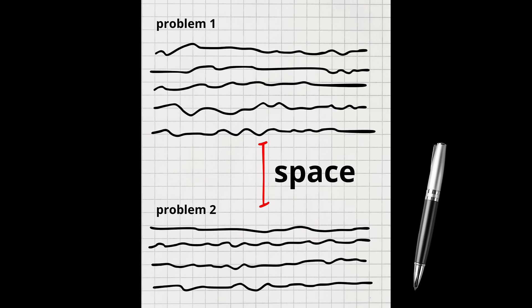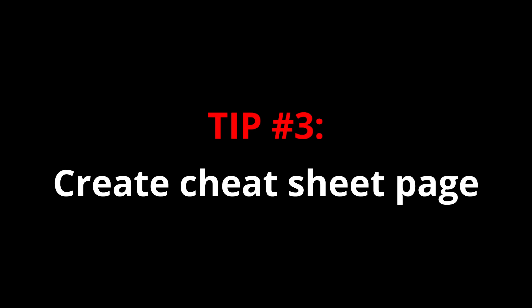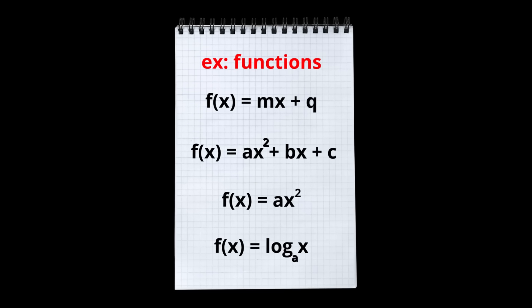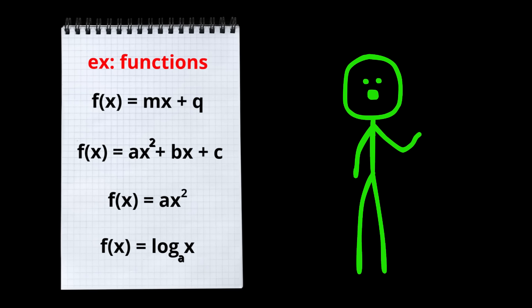Strategic spacing. Leave ample space between problems. That white space will be valuable later on for adding corrections, notes, or insights you have after revisiting the problem. Create a cheat sheet page. Dedicate one page to collecting all the key formulas from a topic, so you'll always know where to find them when you need a quick reference.